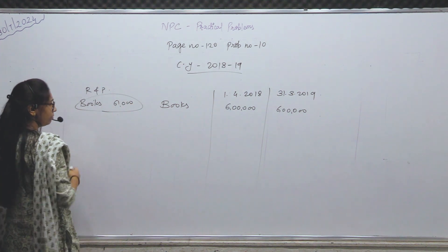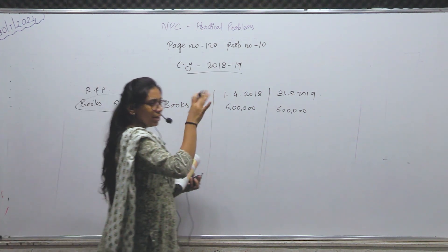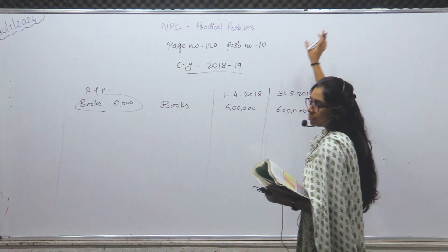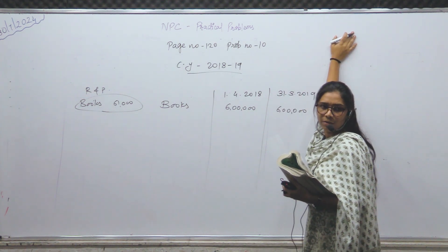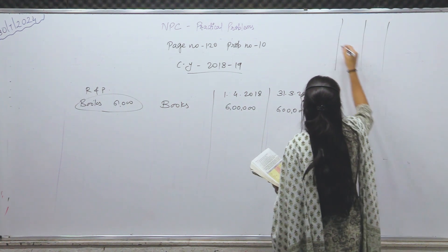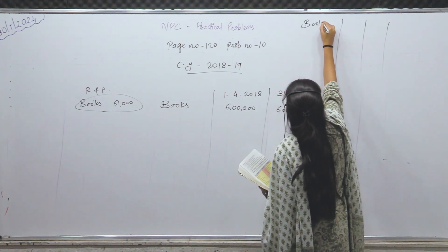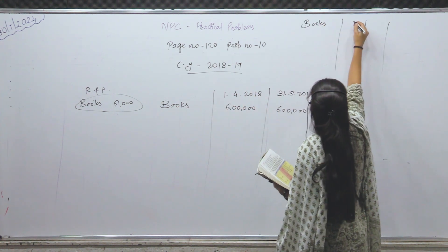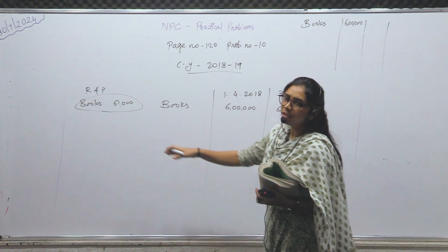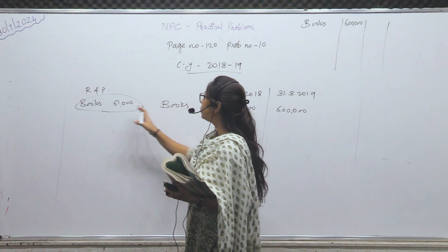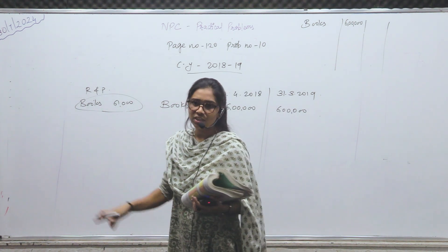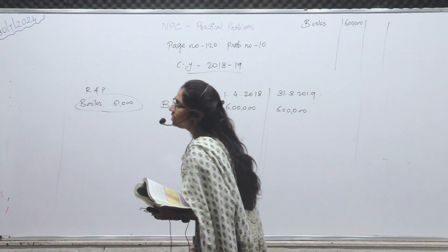अभी effects क्या हो रहे हैं इसकी ध्यान दो। अगर balance sheet में record करोगे तो कैसे करोगे? Opening वाले books सबसे पहले लेंगे। Opening balance books का — asset side — यहाँ पर books लिखोगे कितने के? अपने पास books थे 6,00,000। During the year — receipt and payment में जो दे रखे हैं — books purchase: 61,000।